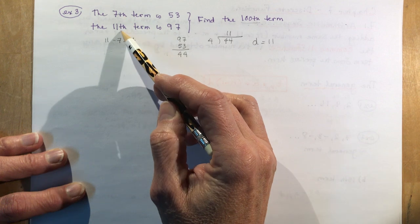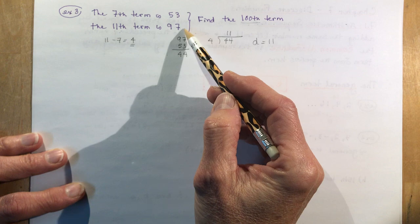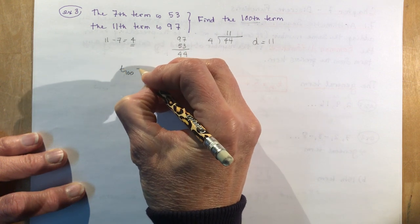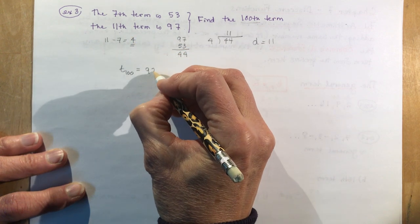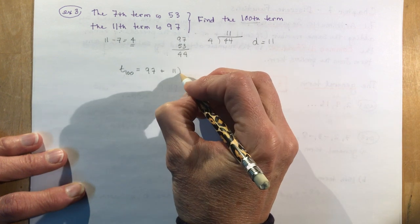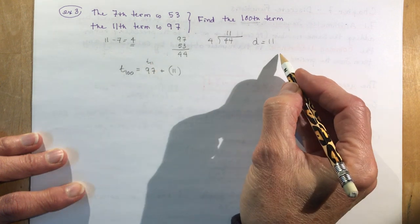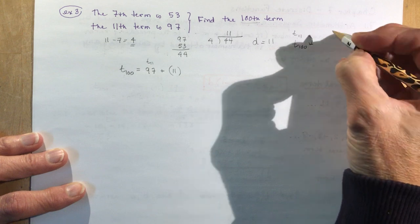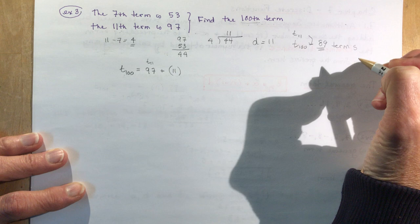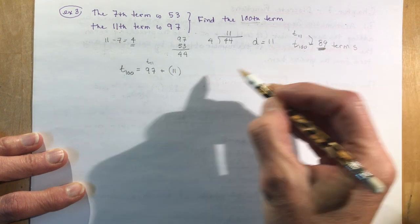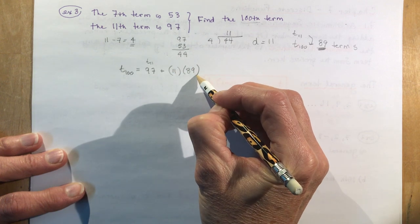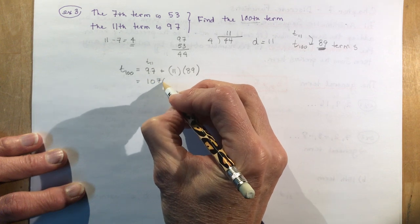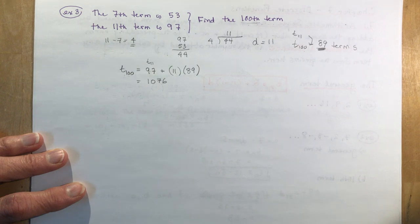Now using t11 = 97 to find t100: from t11 to t100 is 89 terms, so I add 11 eighty-nine times. t100 = 97 + 11 × 89 = 97 + 979 = 1076. That's one method of solving this question.